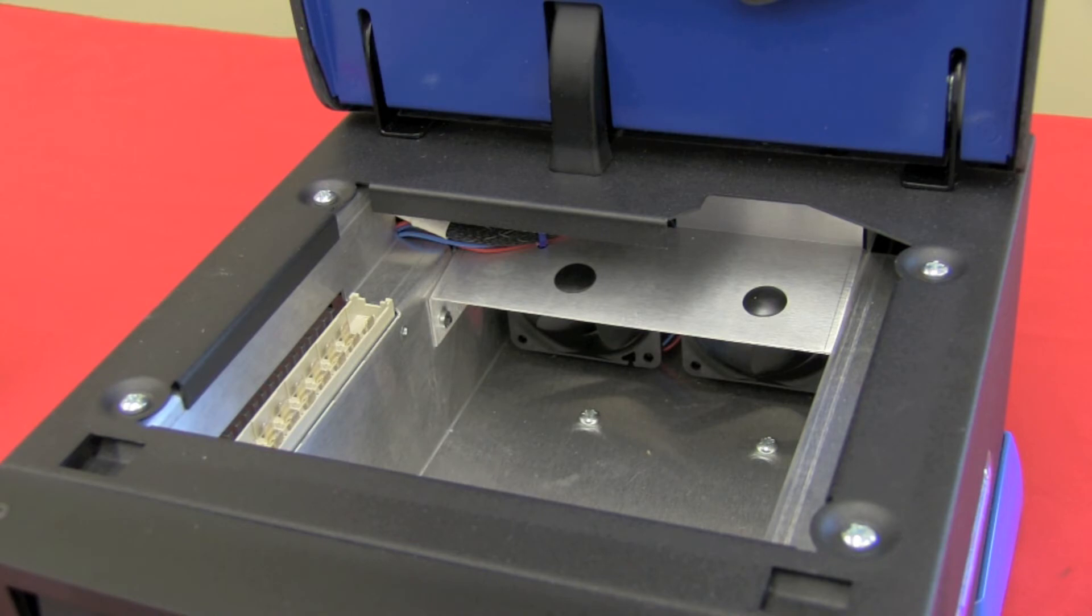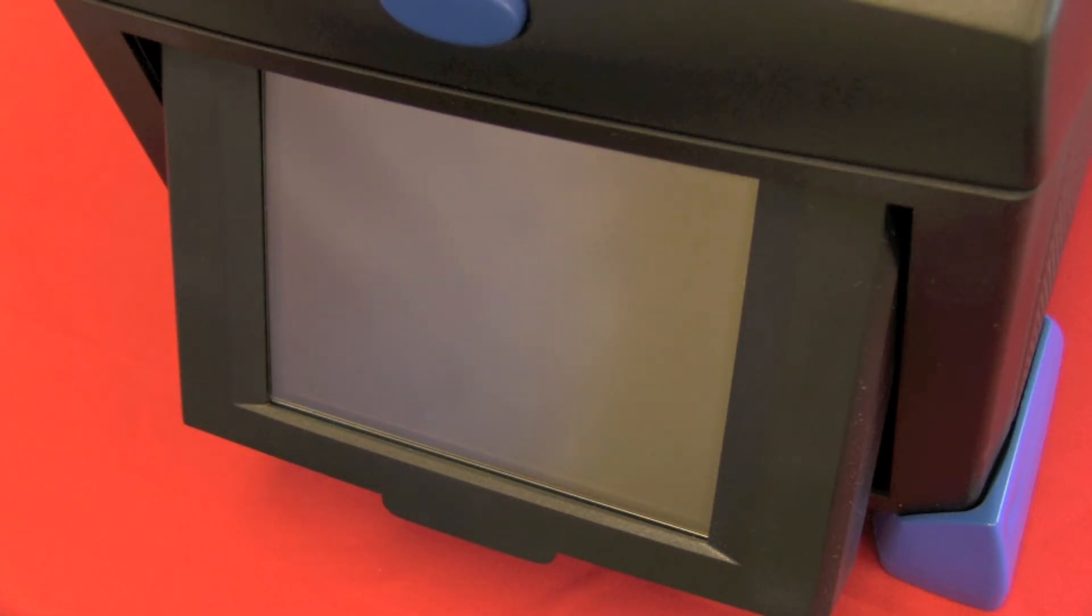When you first power on the Series 6, it runs through a set of diagnostics just to check that everything is okay. You'll notice that there is actually a color display on this unit. The Series 4 doesn't have a color interface. Although it is touch screen, it doesn't have the benefit of color in its display. You can see you're ready to go right from here.